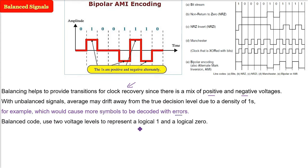So in balanced code, what do we do? We use two voltages to represent 1 and 0. In a balanced code where there is a proper mix of positive and negative voltages,